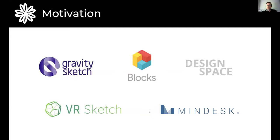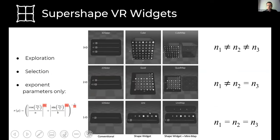VR can surely become an appropriate parametric design medium for modeling objects made with super shapes, especially if we think of them as cross sections to model 3D objects. In our work, we focus on which type of VR widget best suits fundamental super shape modeling tasks — shape exploration and shape selection — and we propose the design of line, quad, and cube shape widgets for probing the 1D, 2D, and 3D exponent parameter spaces.